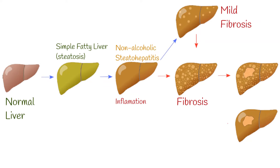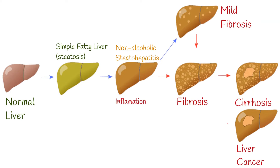Fibrosis can progress to its more serious form called cirrhosis — the most severe stage, occurring after years of inflammation, where the liver shrinks and becomes scarred and lumpy. Cirrhosis damage is permanent and does not recover, eventually leading to liver failure. It is also worth mentioning that liver cirrhosis and fibrosis increase the risk of liver cancer.